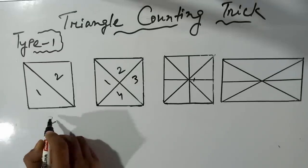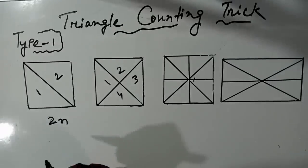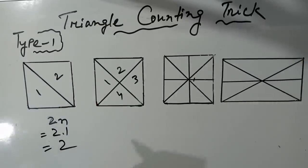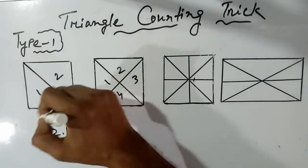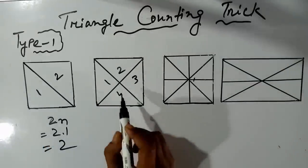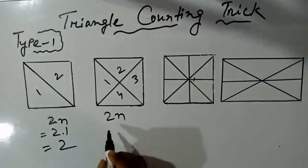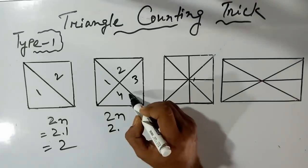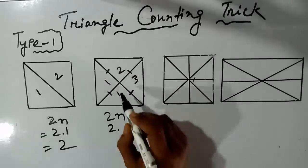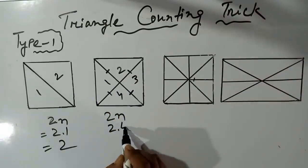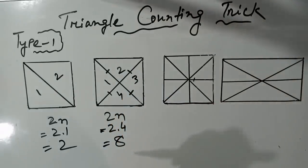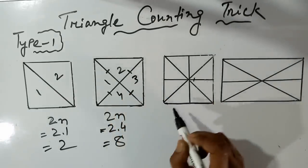The formula is 2×n. This is 2×n. For 2×1, this gives the total count. The formula is twice n — 2×n — where n is the number of partitions. A typical example gives numbers like 6 or 8 for the total number of triangles.